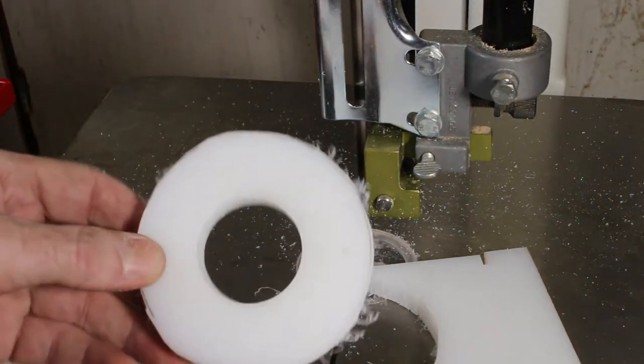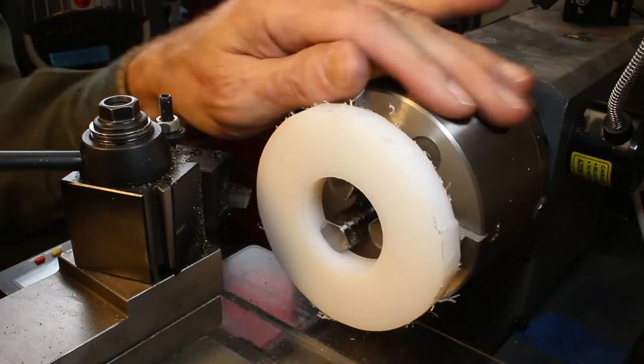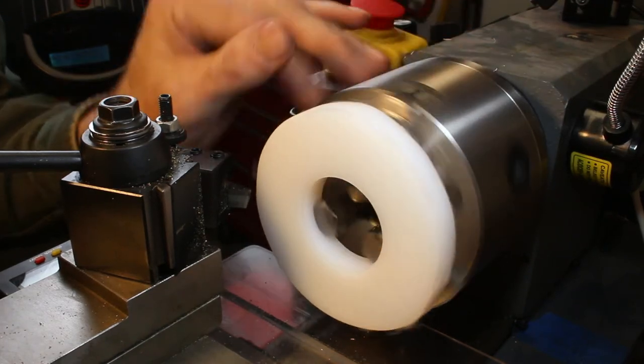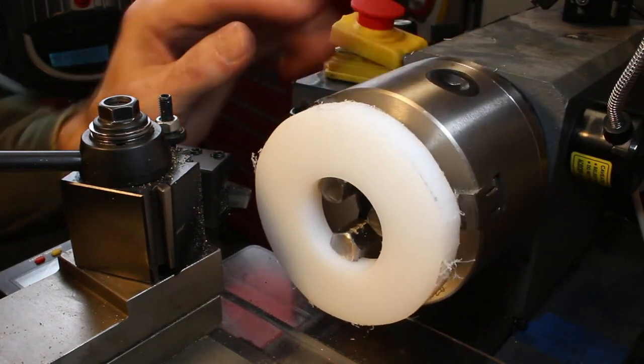Now I'm on my 14-inch woodworking bandsaw to cut out the circle. Okay, that's a nice rough circle.